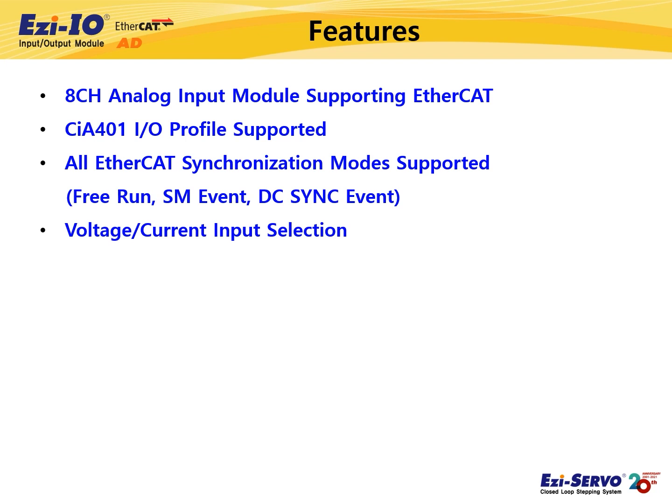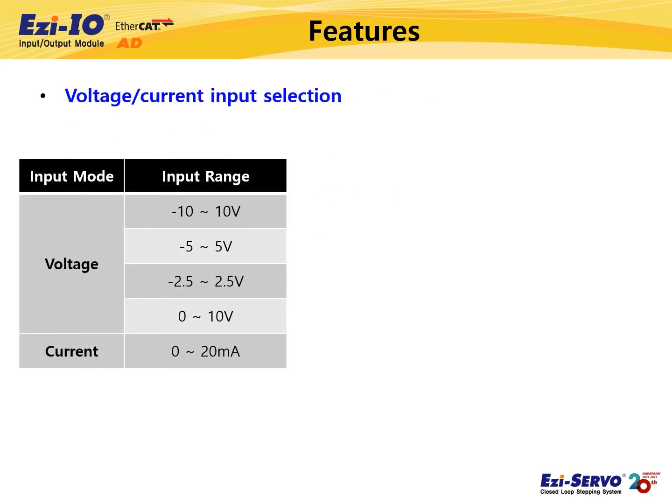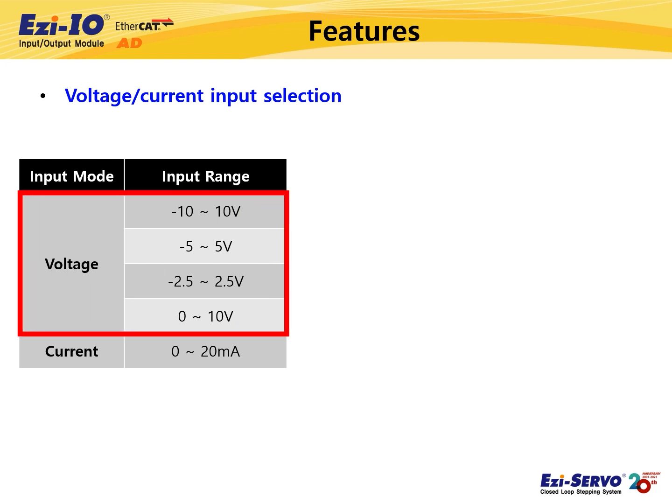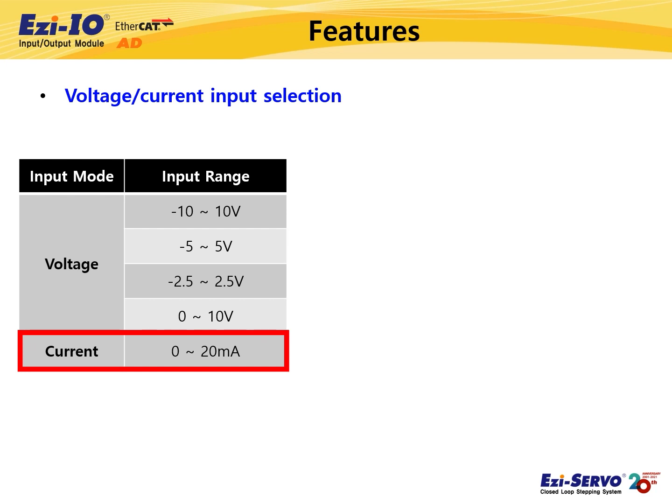Easy IO EtherCAT-AD supports voltage or current input mode — five input modes in total. For voltage input mode, there are four settings: minus 10 to 10 volts, minus 5 to 5 volts, minus 2.5 to 2.5 volts, and 0 to 10 volts. For current input mode, the input range is 0 to 20 milliamperes.